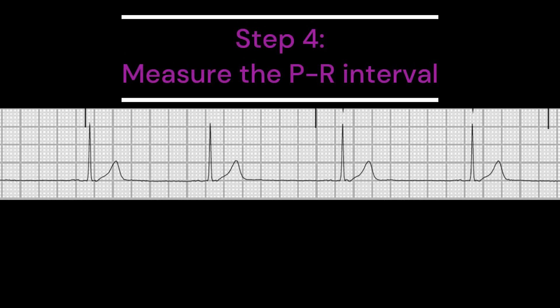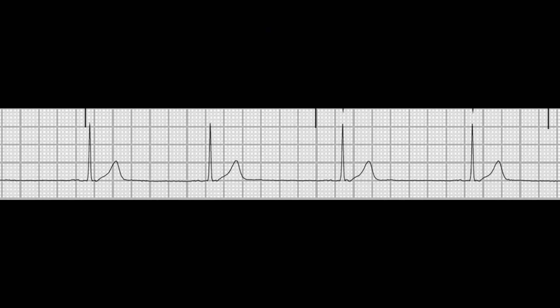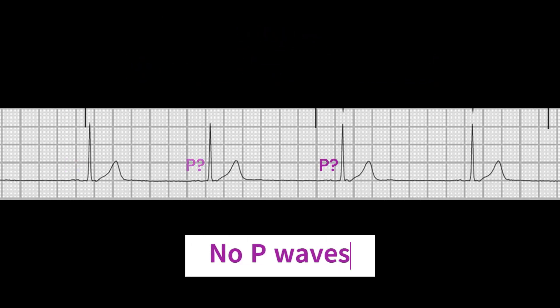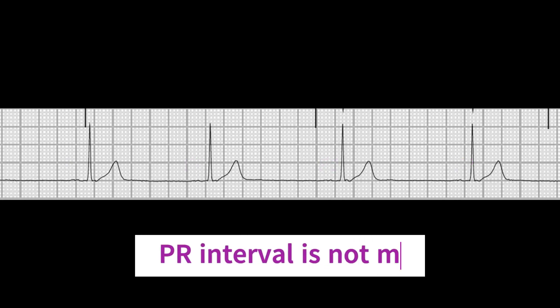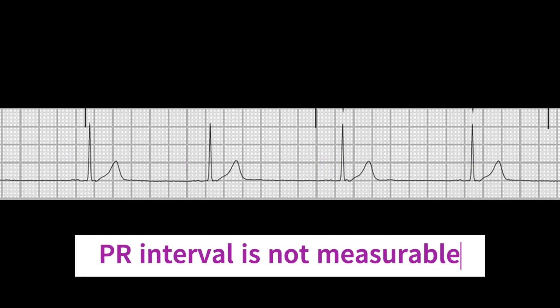The next step is to determine the PR interval. In a junctional rhythm, since there are no P waves, the PR interval is not measurable.